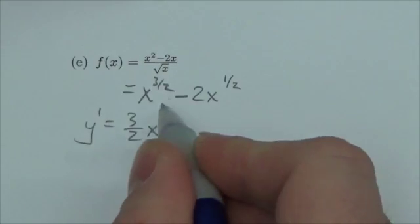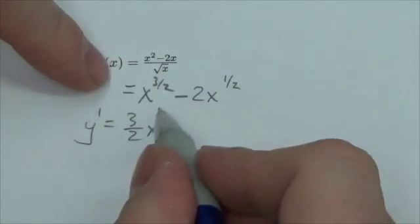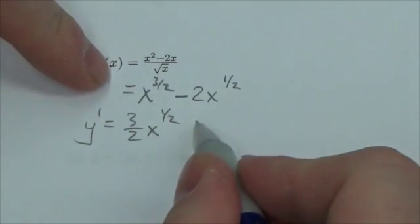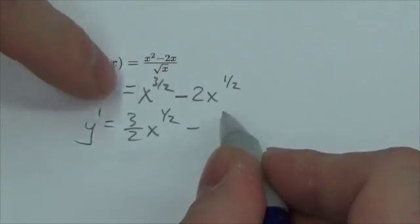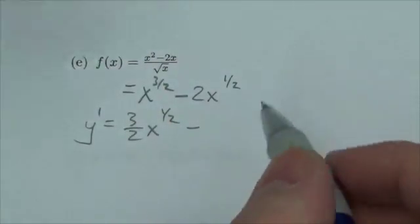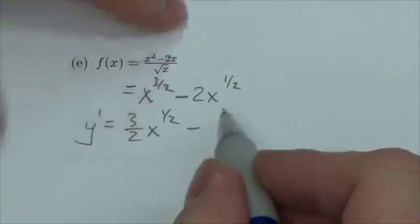3/2 x to the, well now take 1 away from that, so it'll be x to the 1/2, minus, well when I bring the 1/2 down, the 2 times a half will give me just 1, so x to the negative 1/2.